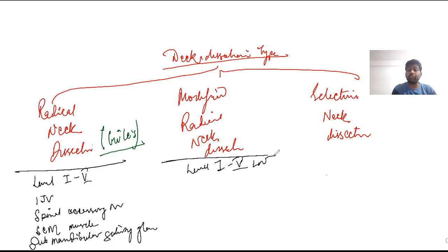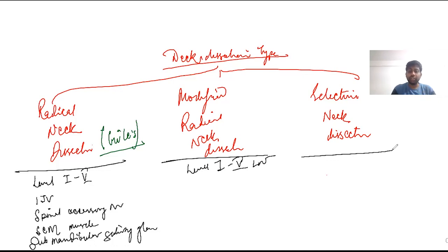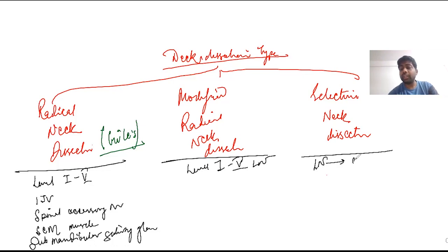How is modified radical neck dissection different from selective neck dissection? In a selective neck dissection, we are not only preserving the vital structures — we are also preserving some of the lymph node stations. Instead of removing all five lymph node stations, we preserve some of them. So when we don't remove all lymph nodes from level 1 to level 5, we call it selective neck dissection. The lymph nodes are removed selectively and all three structures are preserved.